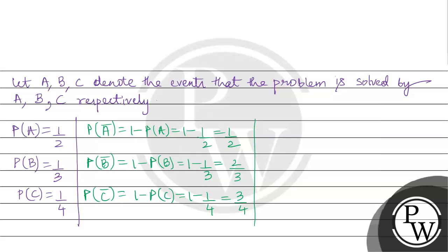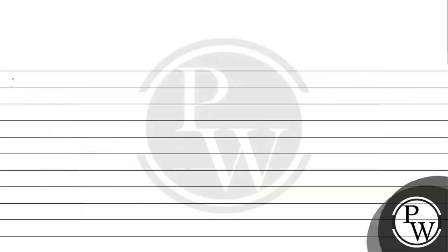Therefore, the required probability will be 1 minus P of A bar times P of B bar times P of C bar. That is 1 minus 1 by 2 times 2 by 3 times 3 by 4.